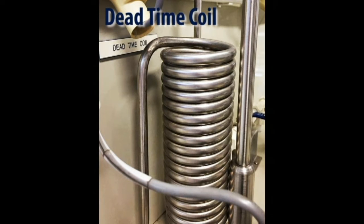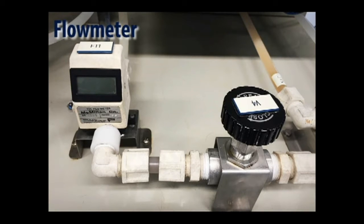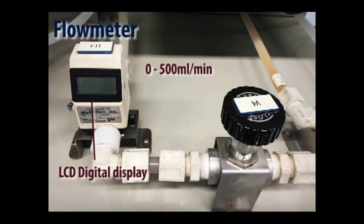The delay time coil is made up of stainless steel tubing. It can hold up to approximately 200 ml of the solution. The flow meter has an LCD display. It is ranged from 0 to 500 ml per minute and the output is ranged from 0 to 5 VDC.